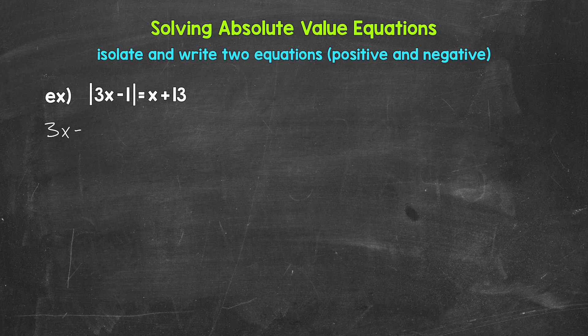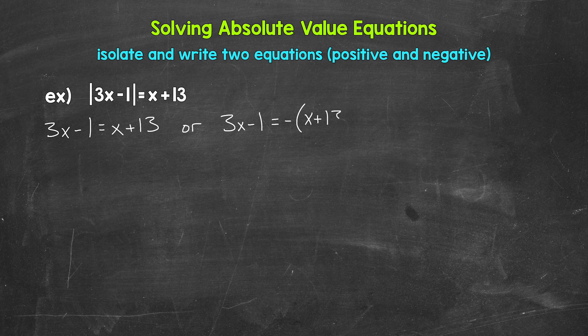So we have 3x minus one equals x plus 13 — that's our positive equation. Or 3x minus one equals negative, and then we have x plus 13. You'll notice I have x plus 13 within parentheses, and that negative goes on the outside of the parentheses, because it's applied to everything on that side of the equation. Make sure to use parentheses with a negative outside so the negative is applied to everything on that side.